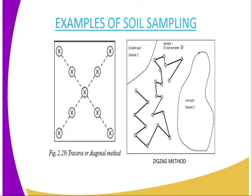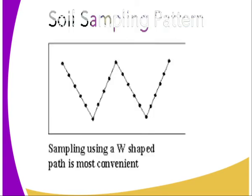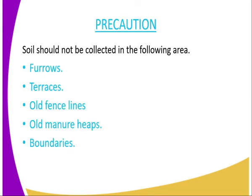There are several points or stations where the soil should be taken from. The third method is soil sampling using the W-shaped path, and this is actually the most convenient method.